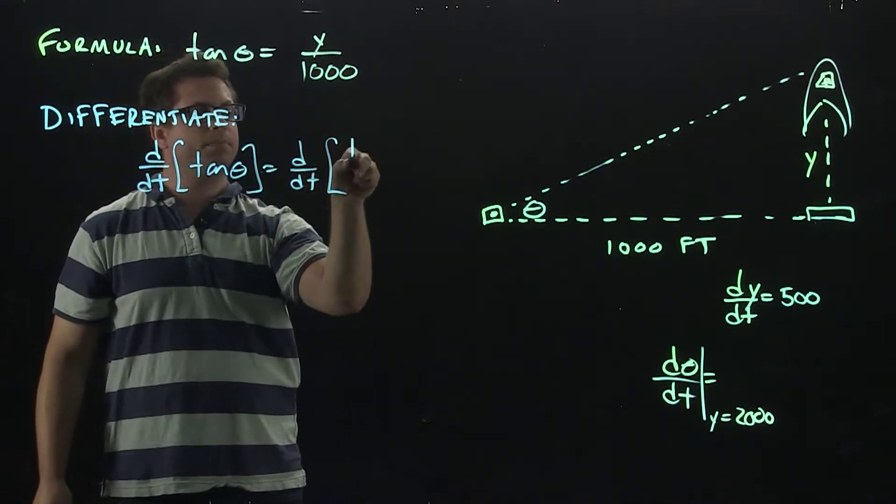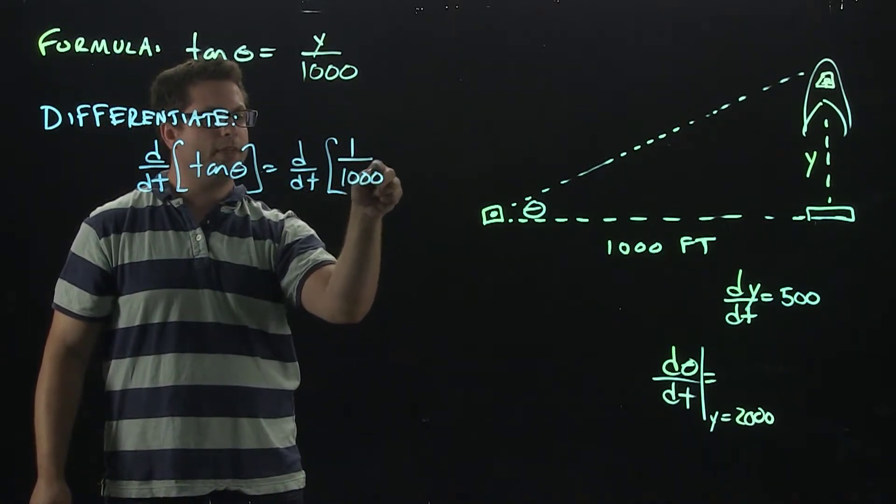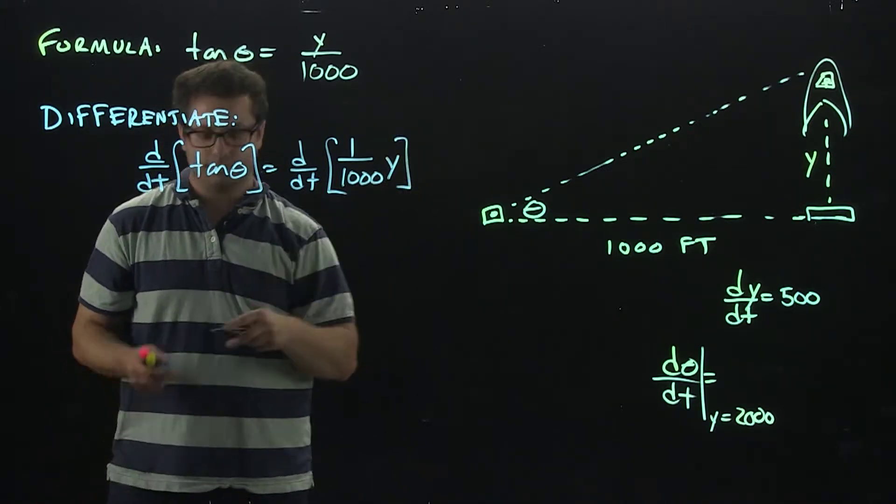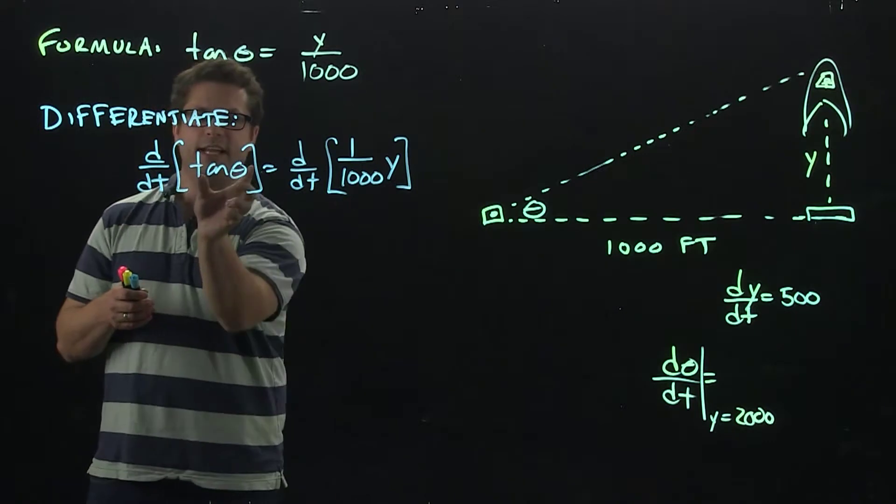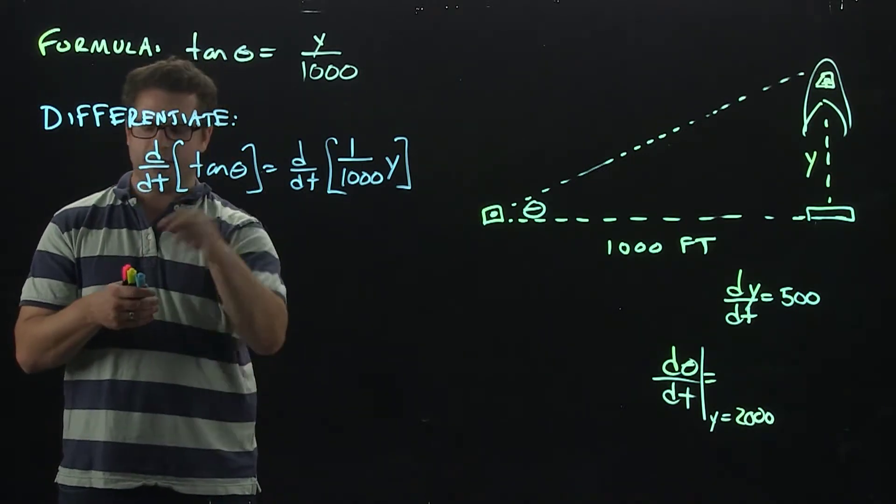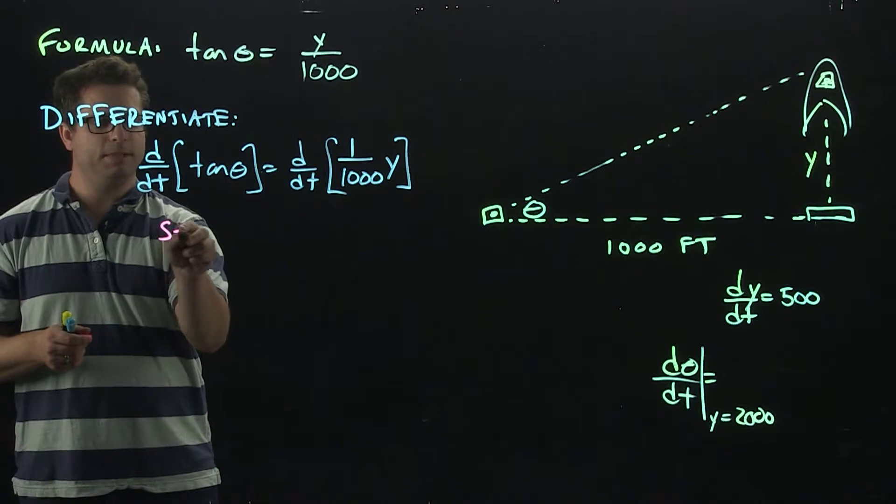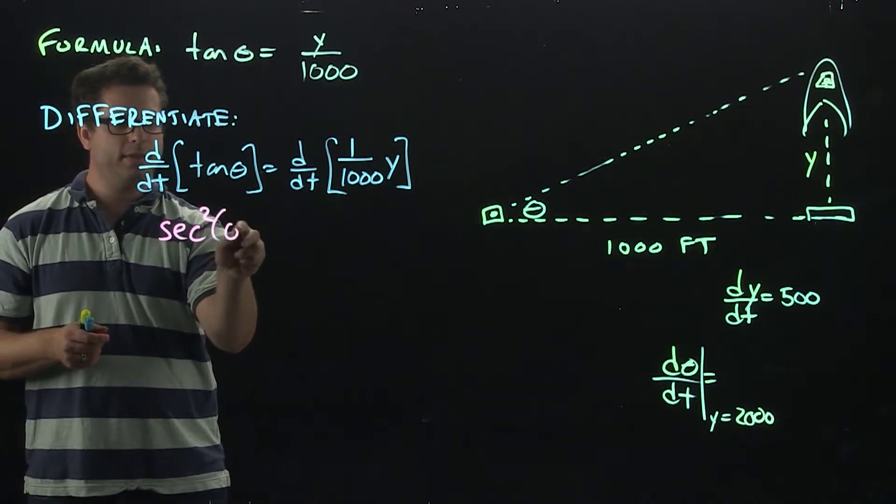Now, the way it's written right now, it'd be easier to write it as 1 over 1,000 y. All right, so let's differentiate tangent. Since theta is inside tangent, we got to deal with tangent first. The derivative is going to be secant squared theta.